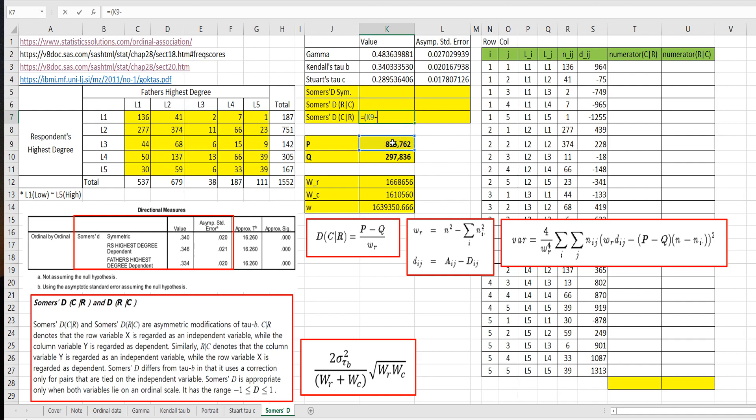P minus Q over WR. And SOMOSD for row given column, the numeral part is same, P minus Q and over WC.